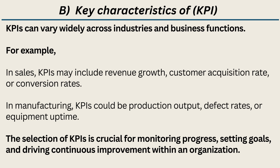KPIs can vary widely across industries and business functions. For example, in sales, KPIs may include revenue growth, customer acquisition rate, or conversion rates. In manufacturing, KPIs could be production output, defect rates, or equipment uptime. The selection of KPIs is crucial for monitoring progress, setting goals, and driving continuous improvement within an organization.